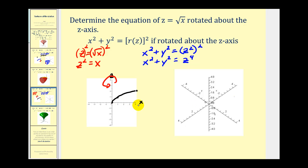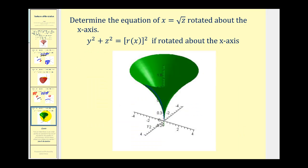If we sketch the generating curve on the xz-plane, it would look just like the previous example. If we rotate this about the z-axis, it produces a different surface. We can see the generating curve rotated about the z-axis producing this shape. So not only do we have the graph of the surface, we were also able to find the equation of the surface pretty easily.